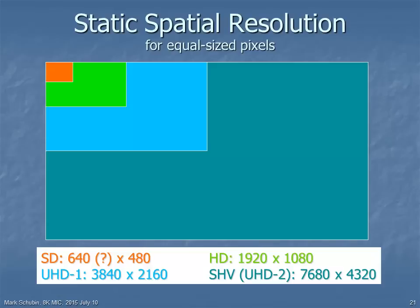Today, thanks to work pioneered here in Japan, we've gone from standard definition to high-definition television, and there are further steps to 4K and 8K television — super-high vision as you've been hearing about today. Those numbers are based on the number of pixels per scanning line, not the number of scanning lines in the image.